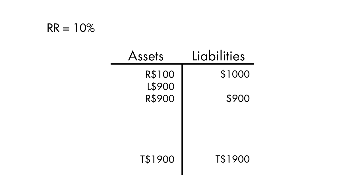What if both depositors demand all of their money? That's $1,900 total, and yet the bank physically has only $1,000 in reserve. It can't meet the demands of both depositors. The bank experiences a run. The bank then has to borrow money from other banks to cover them. If no other bank will lend to them, then the Fed steps into its role as lender of last resort, and lends the bank the money to cover the deposits. It was the Fed's failure to do precisely that which turned a burst financial bubble into the Great Depression.